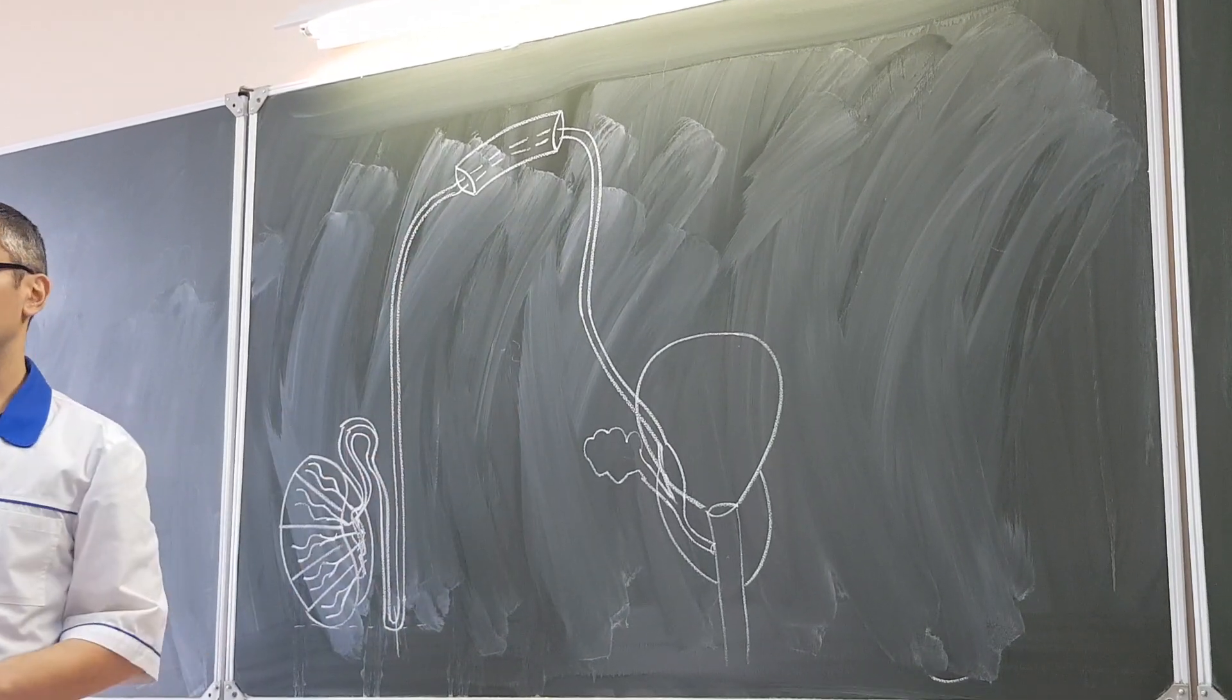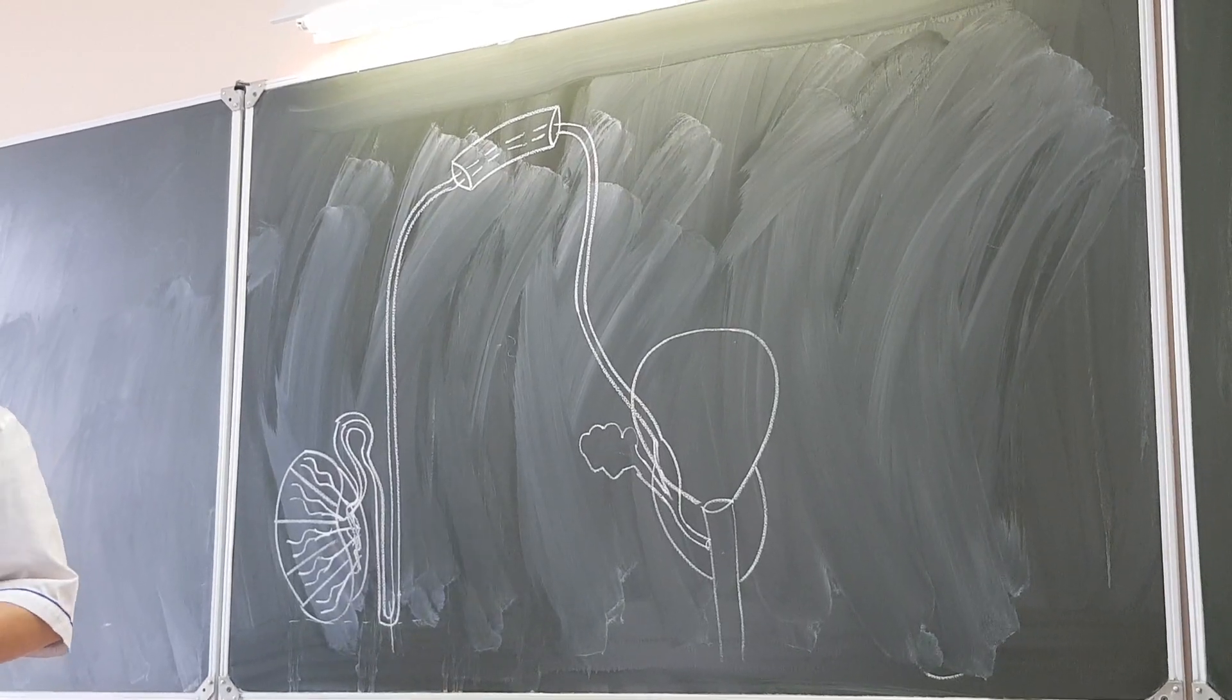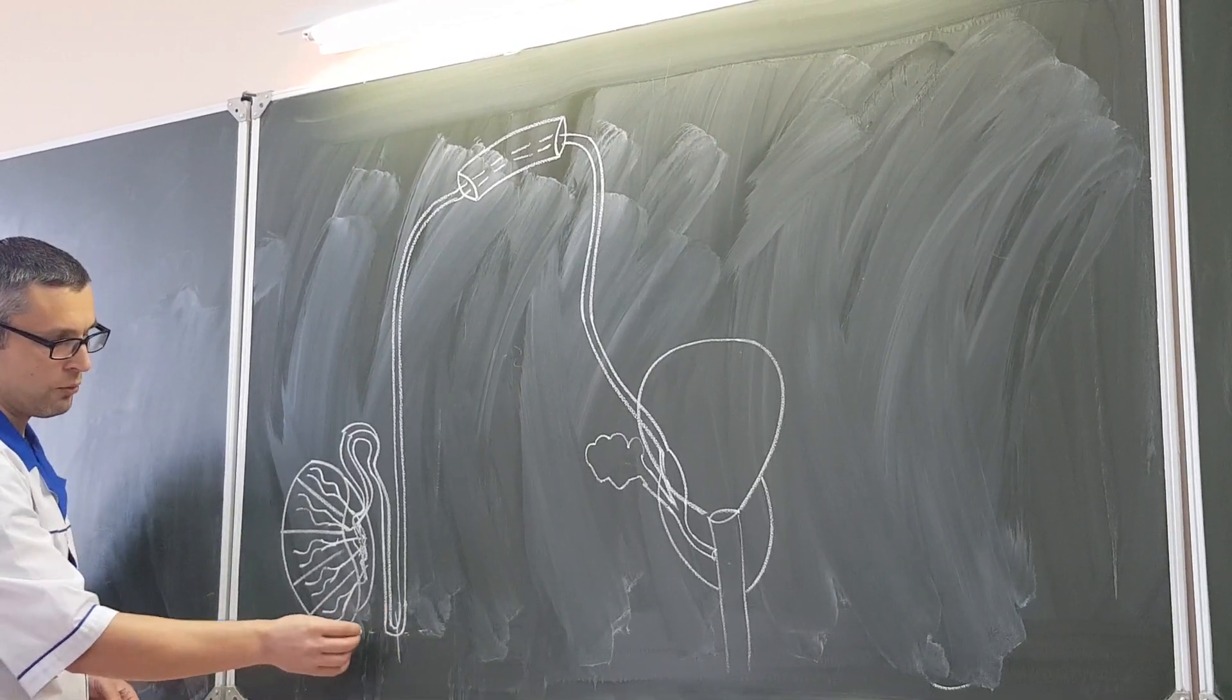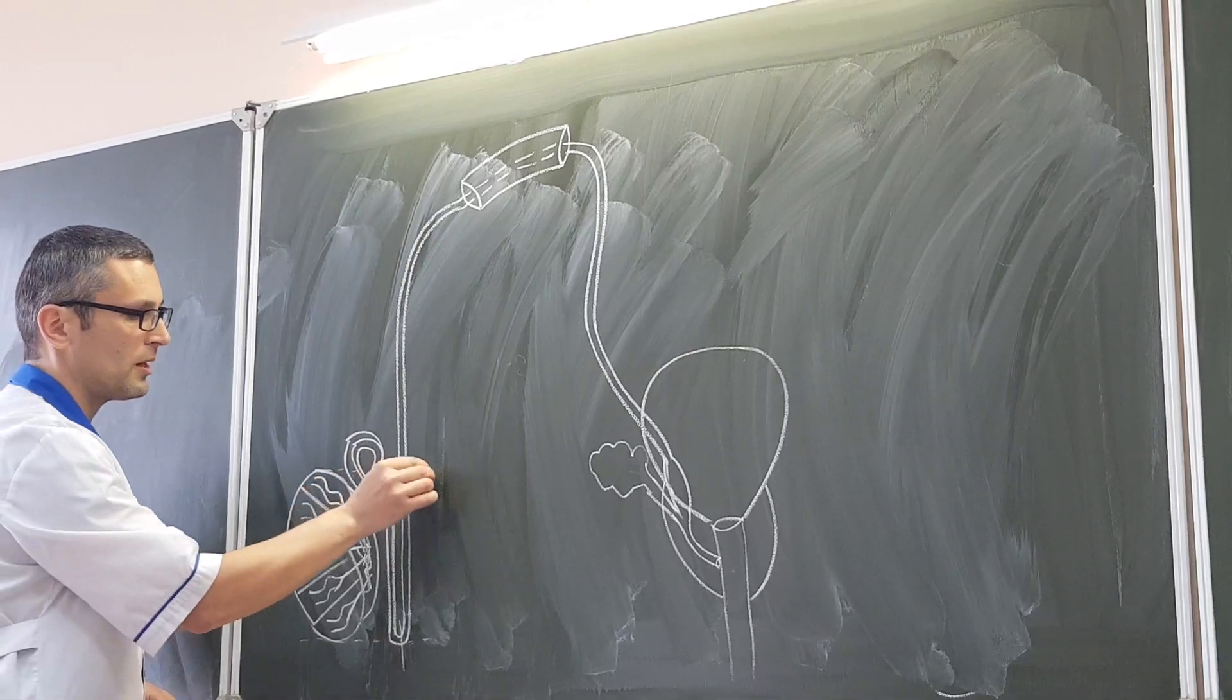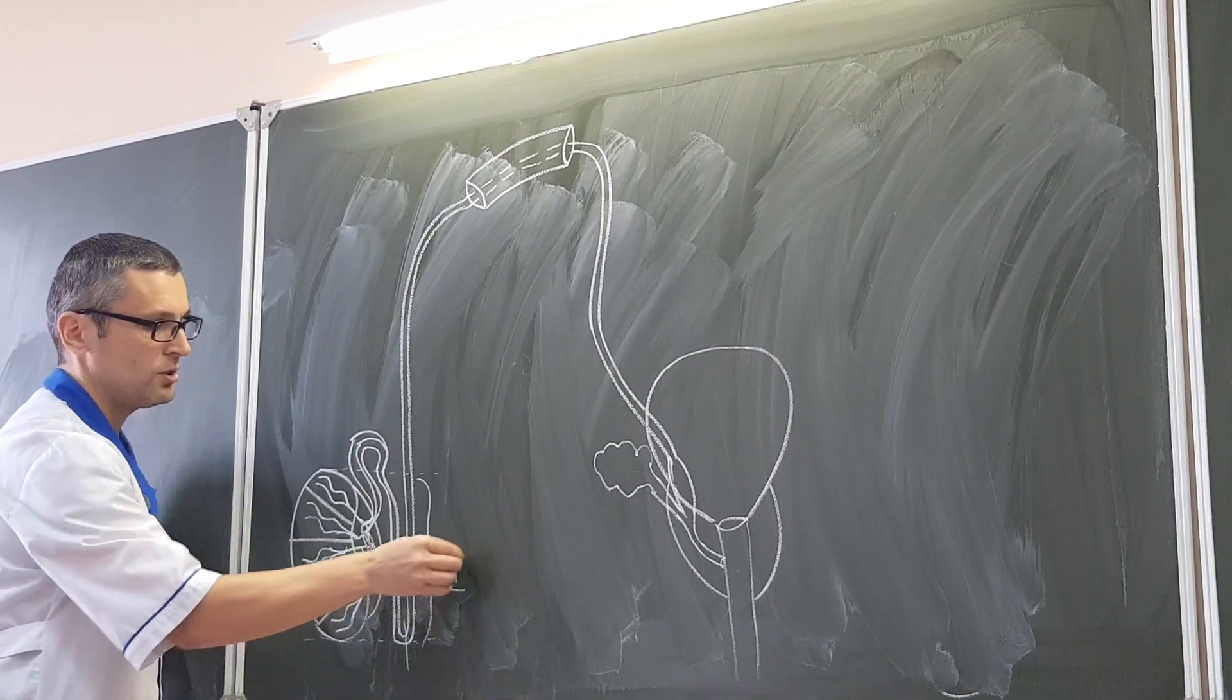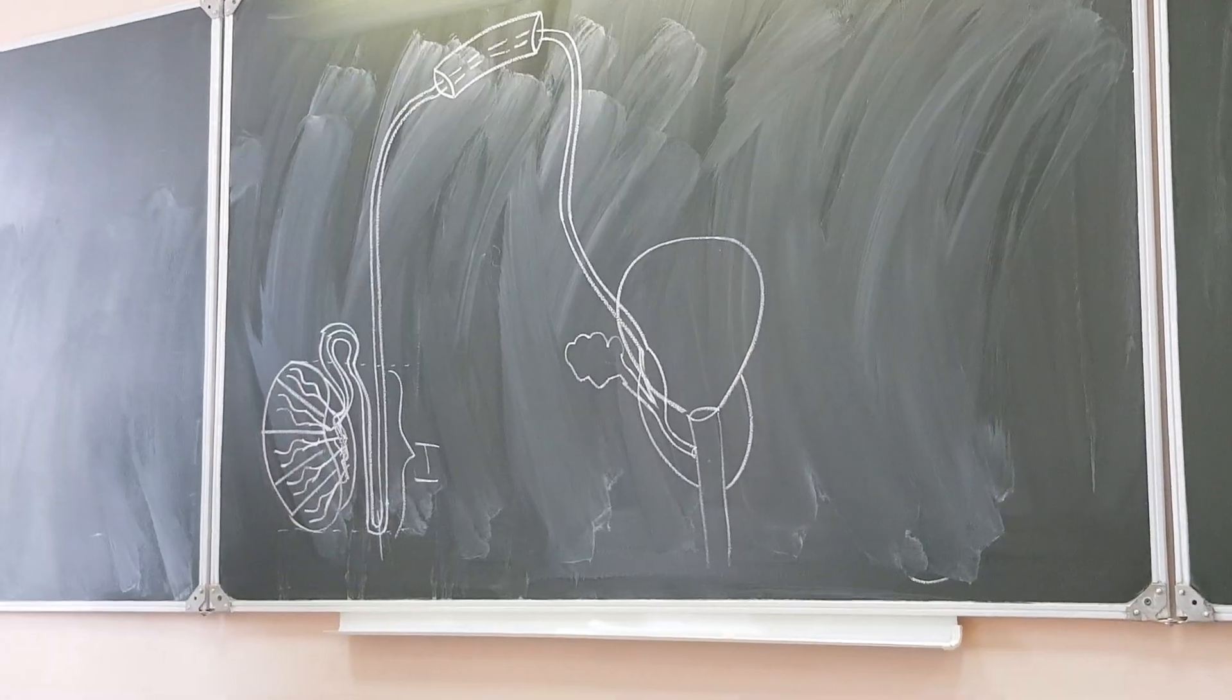Deferent duct is too long. That's why we can divide it into parts. First part of deferent duct corresponds to testis. So, it passes from the beginning, from the lower end of the testis, up to the upper end of the testis. And this part of deferent duct is first part, initial part. And because it corresponds to testis, it is called pars testicularis.